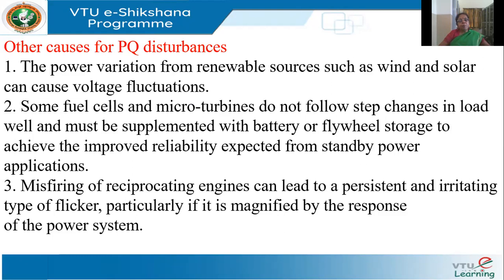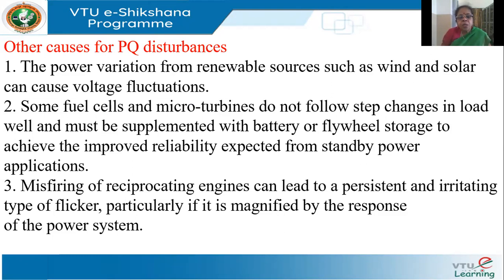The third problem which can arise is misfiring of reciprocating engines. Engines coupled to a generator are also used as distributed generators. When the engine doesn't fire properly, you can have a very irritating flicker, which can be magnified depending on the configuration of the power system at the point of interconnection. These are some of the issues we are likely to have with distributed generation.